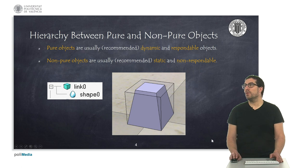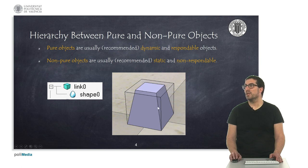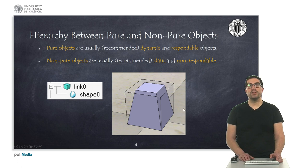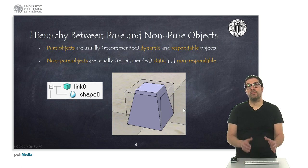Here we show an example in which we have a pure geometry and a non-pure geometry. The pure geometry is this cube here with the transparency, and the non-pure geometry is this object here inside. As you can see, we have dragged the non-pure object inside the pure object to establish the hierarchy. Obviously, the better adjusted the pure geometry is to the non-pure geometry, the more realistic the simulation will be.